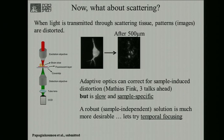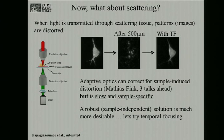What you really want is a robust, sample-independent solution that, independent of the exact position inside the sample, gives you more or less a smooth pattern. When you pass temporally-focused light through turbid tissue — as measured after 500 microns of propagation through a brain slice — except for a slight smearing of fine features, the image is completely maintained in a smooth fashion.